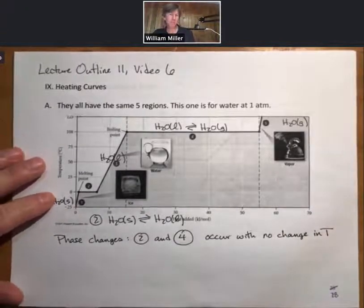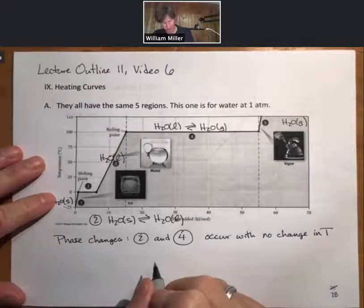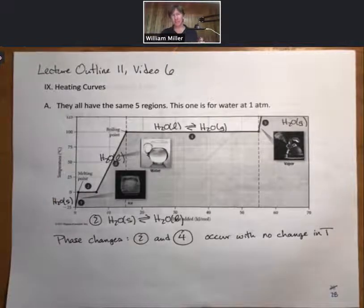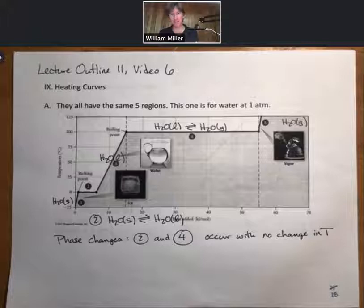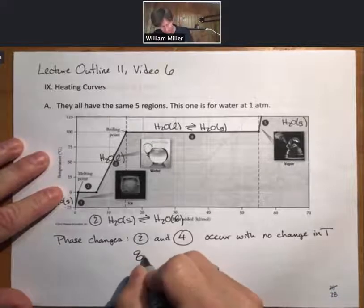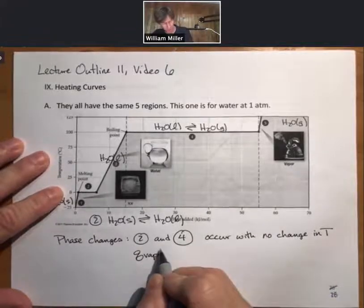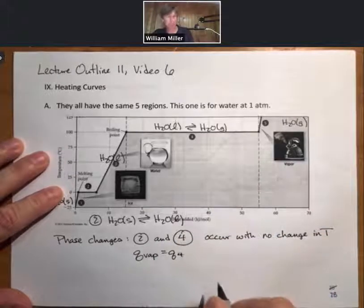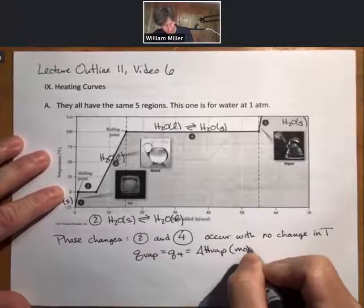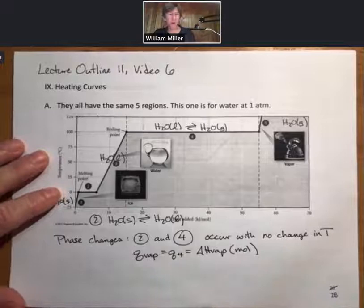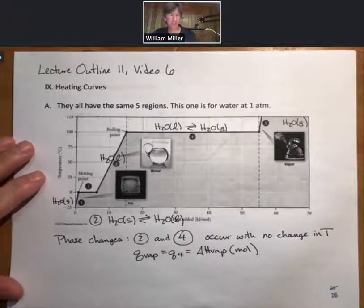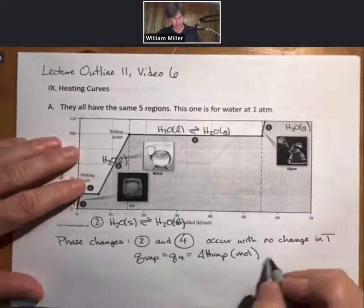This is important because we're going to calculate this energy, and we need to be able to separate the calculations that involve temperature changes from those that don't. Phase changes occur with no change in temperature. For example, for four, which is vaporization, it'll be delta H vaporization times moles. We'll see that.